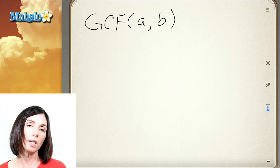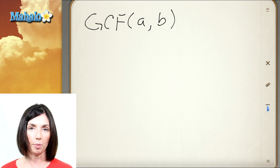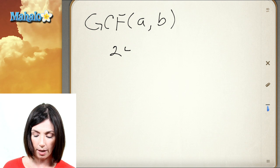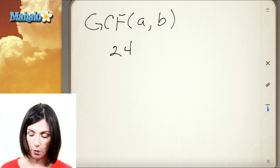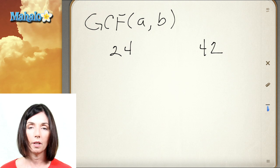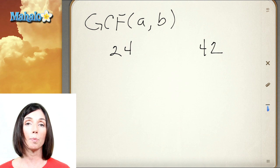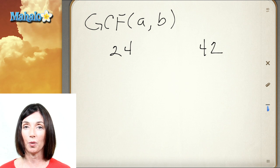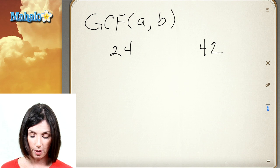So let's try it with a couple of numbers and see what happens. Let's find the greatest common factor of 24 and 42. I'm going to do this by finding the prime factorizations of both these numbers.